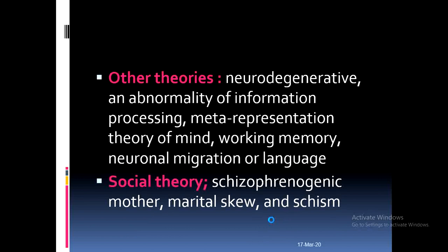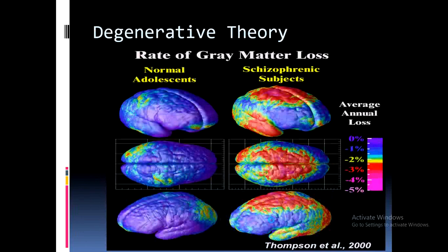Social theory includes the schizophrenogenic mother theory, marital skew, and marital schism. The schizophrenogenic mother theory refers to covert messages given by the mother that differ from overt messages, causing a splitting of the mind. Marital skew is when parents pull their children towards their own side — either toward the father or the mother. Schism means splitting: the father pulls the children psychologically toward him while the mother pulls them toward her, causing the children's minds to split.